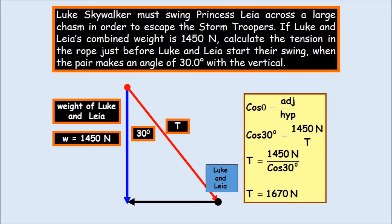Now, Luke Skywalker must swing Princess Leia across a large chasm in order to escape from the stormtroopers. If Luke and Leia's combined weight is 1450 newtons, calculate the tension of the rope just before Luke and Leia start their swing when the pair makes an angle of 30 degrees with the vertical. Well, it's only one line. So the entire blue line is 1450 newtons. I'm looking for the red line, which is the tension and solving using 30 degrees cosine function.